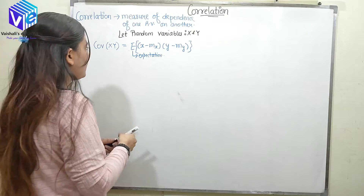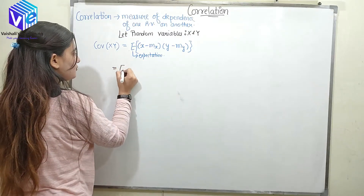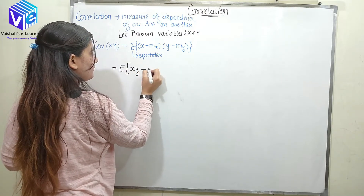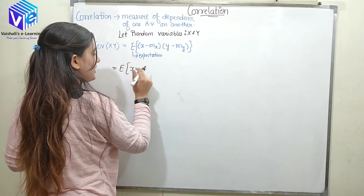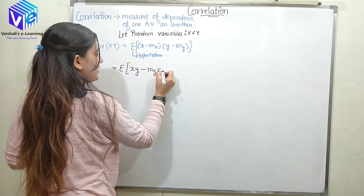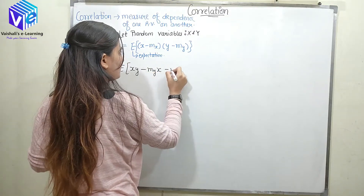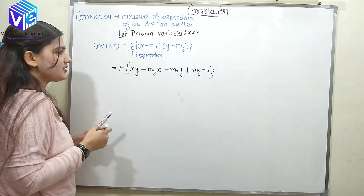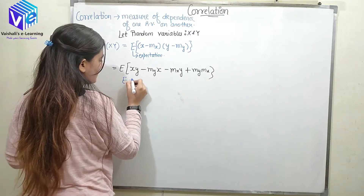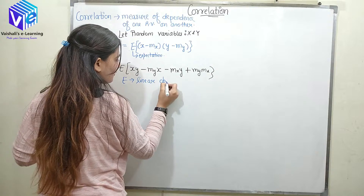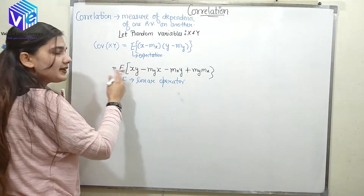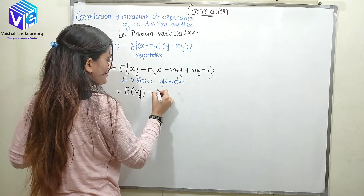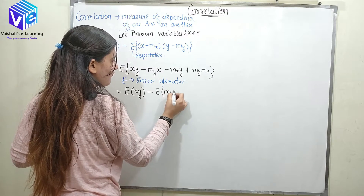To find the formula for covariance, I can multiply out the terms. So x and y get multiplied to give xy, then minus m_y times x, minus m_x times y, plus m_y times m_x. Because E is a linear operator, I can expand this expectation across each term.